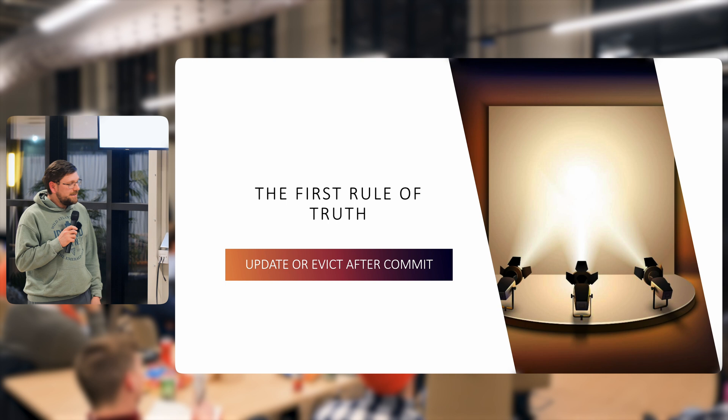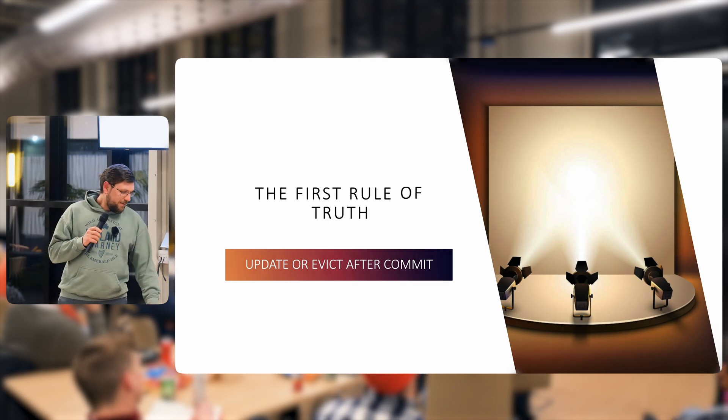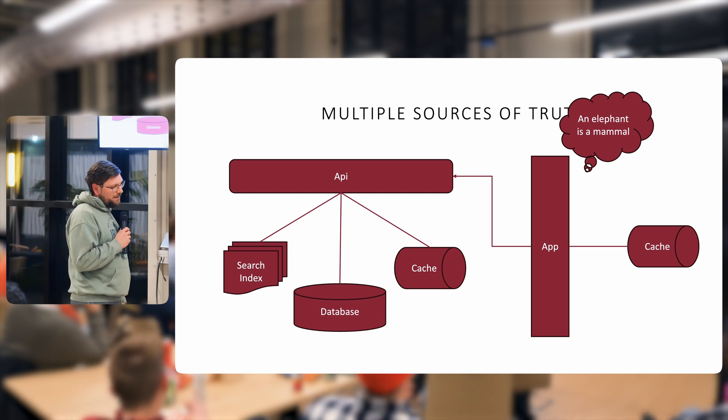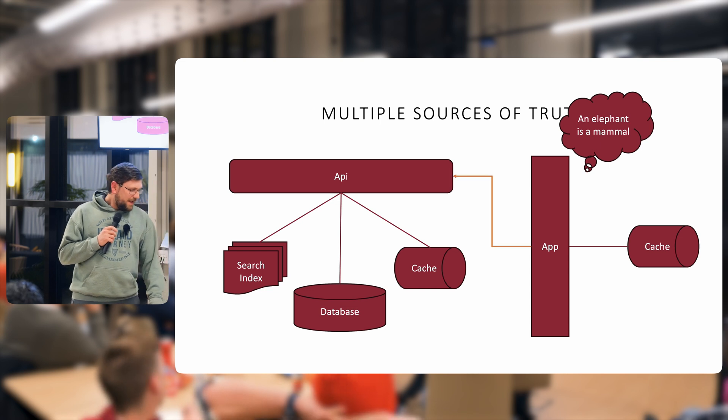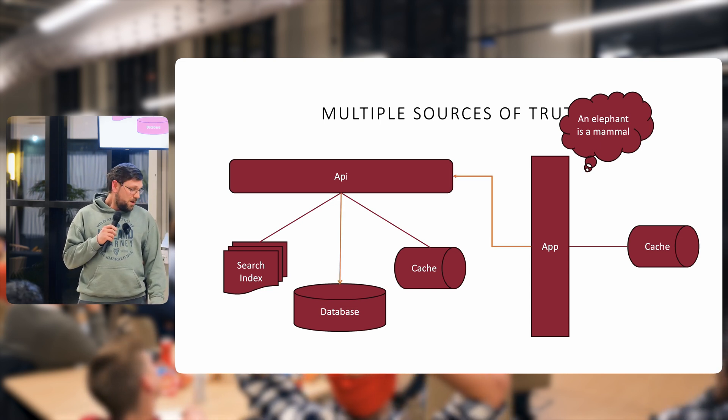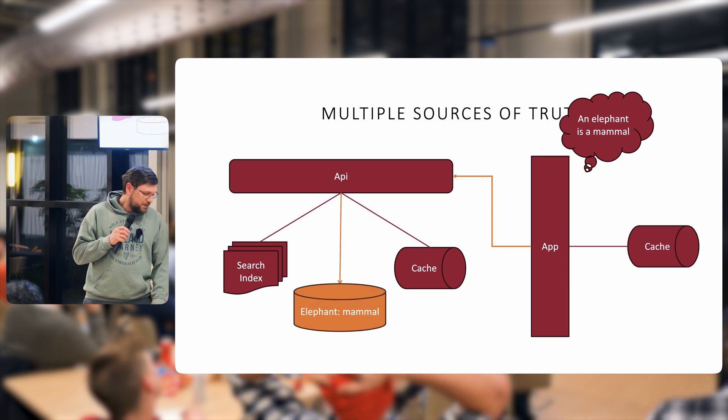The first rule is always update or evict after commit. And to kind of show how this is a problem we're going to imagine an app that tells an API that an elephant is a mammal. It's going to call the API. The API is going to start a transaction and write into the database that an elephant is a mammal.